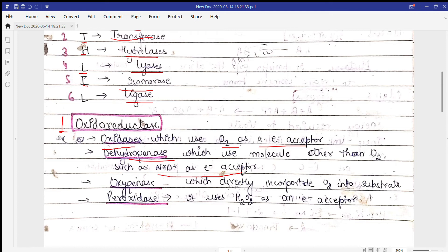This H+ is removing, so this is a dehydrogenase process. Next is oxygenase, which directly incorporates oxygen into the substrate. Peroxidases are also included in this class because they use H2O2 as an electron acceptor.